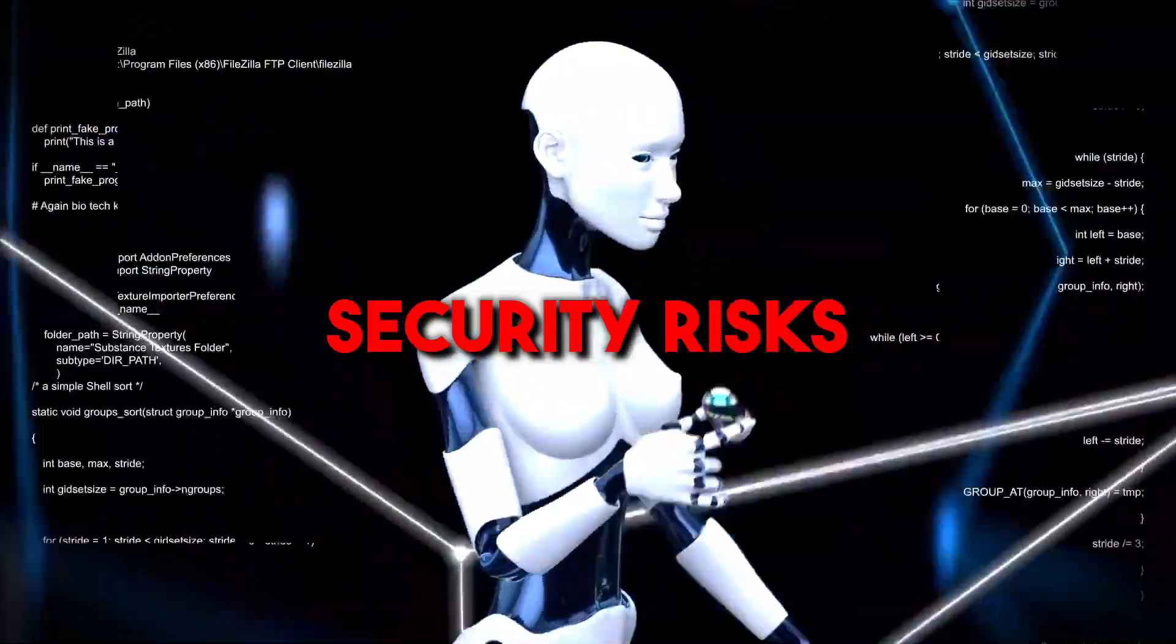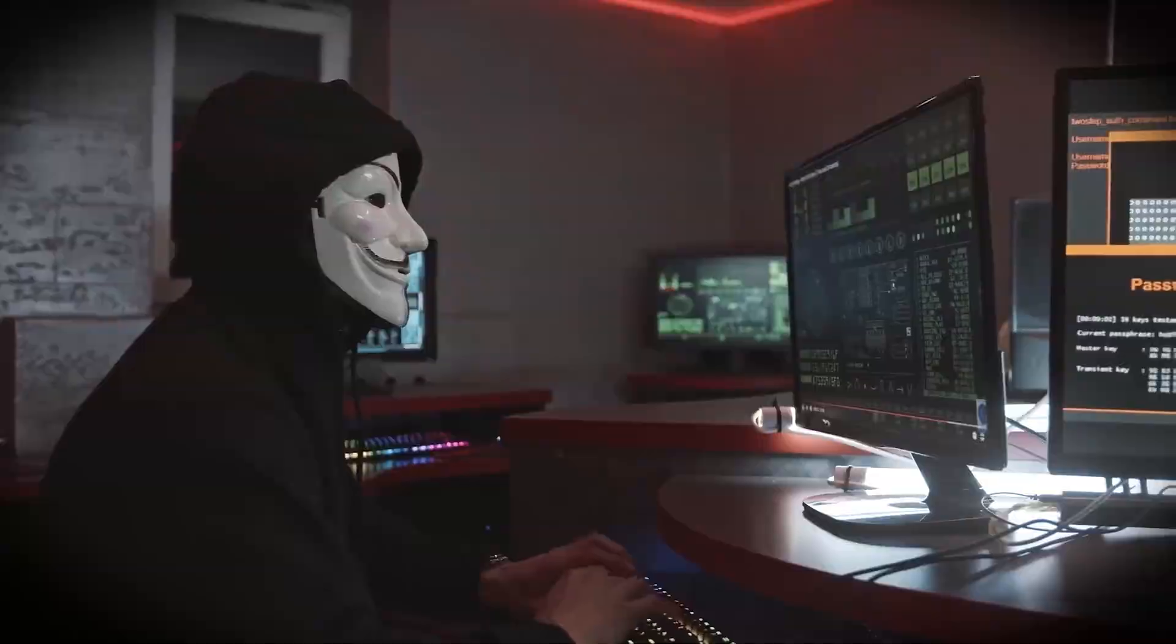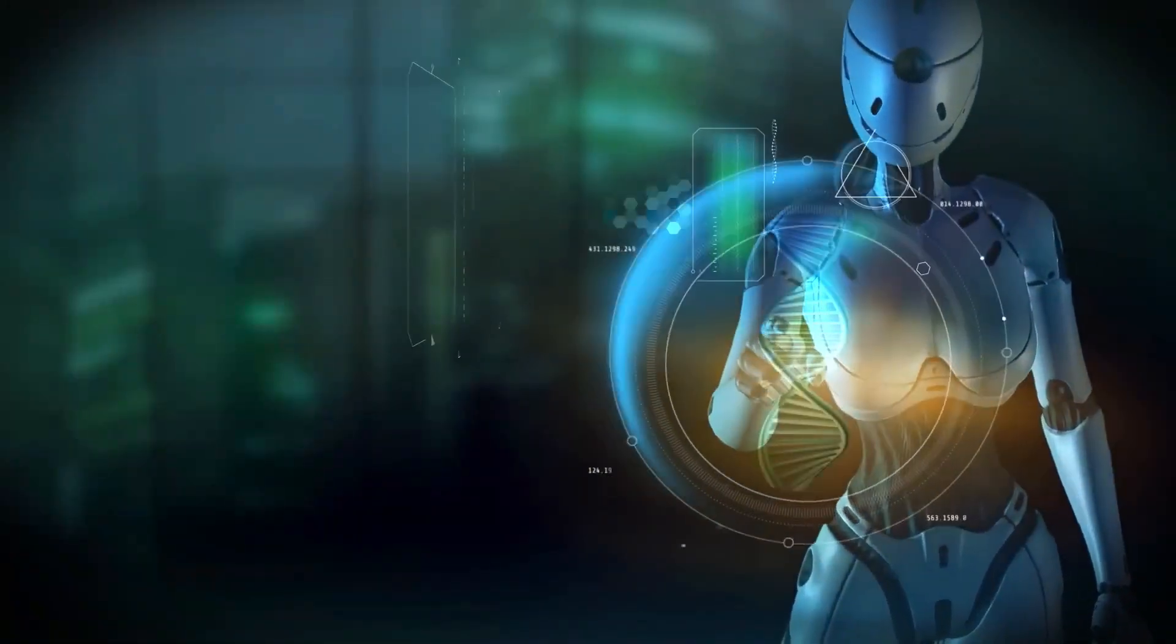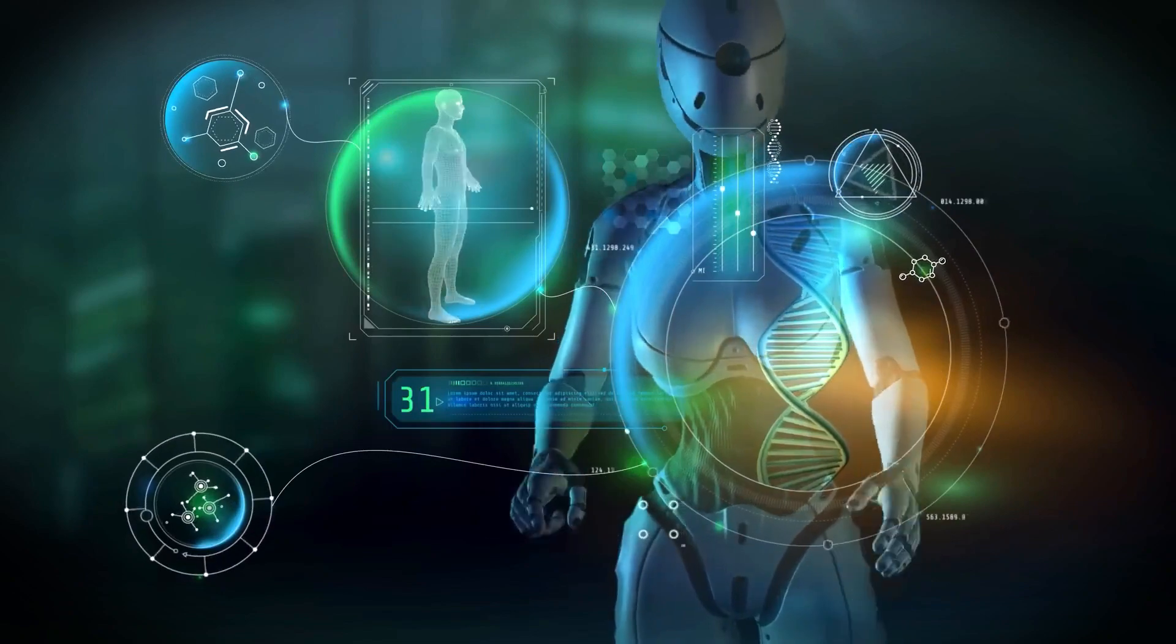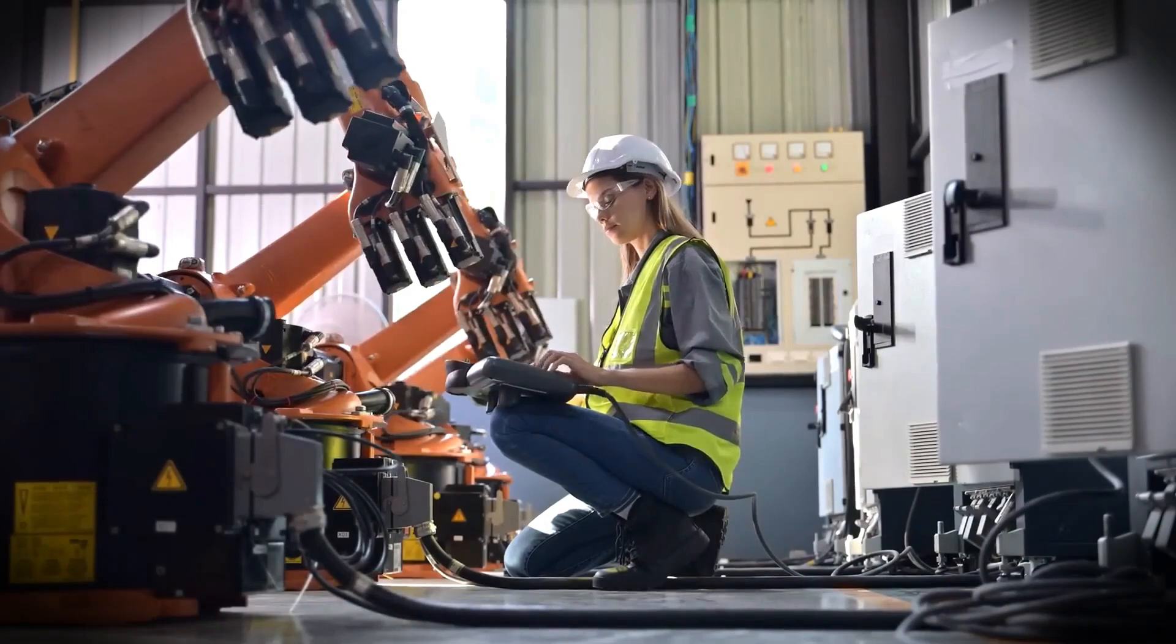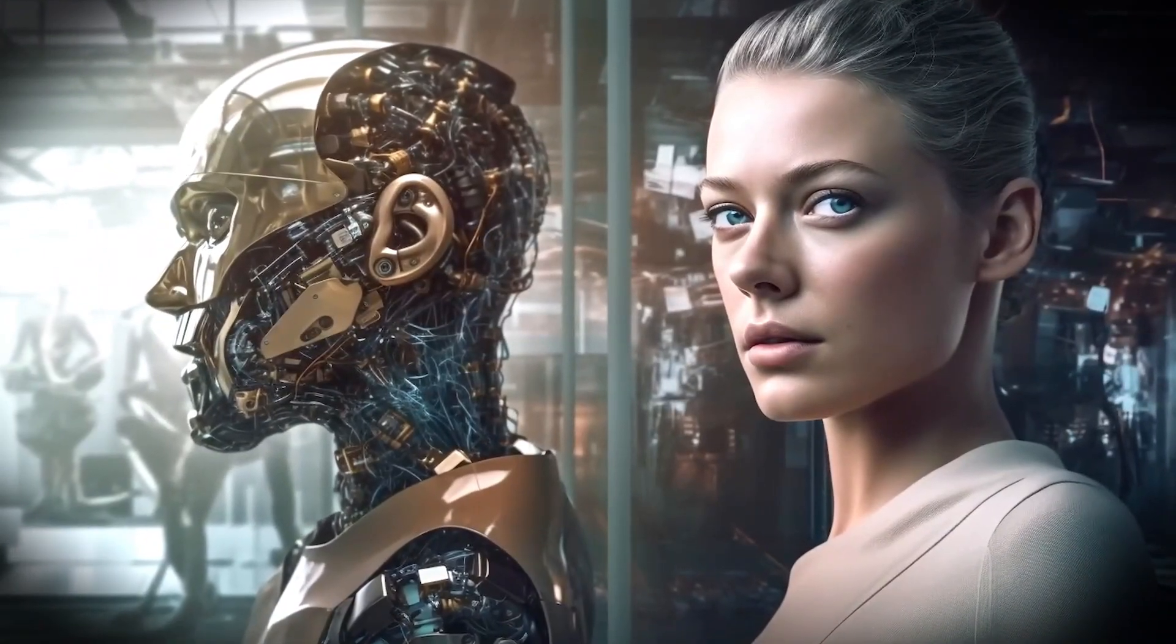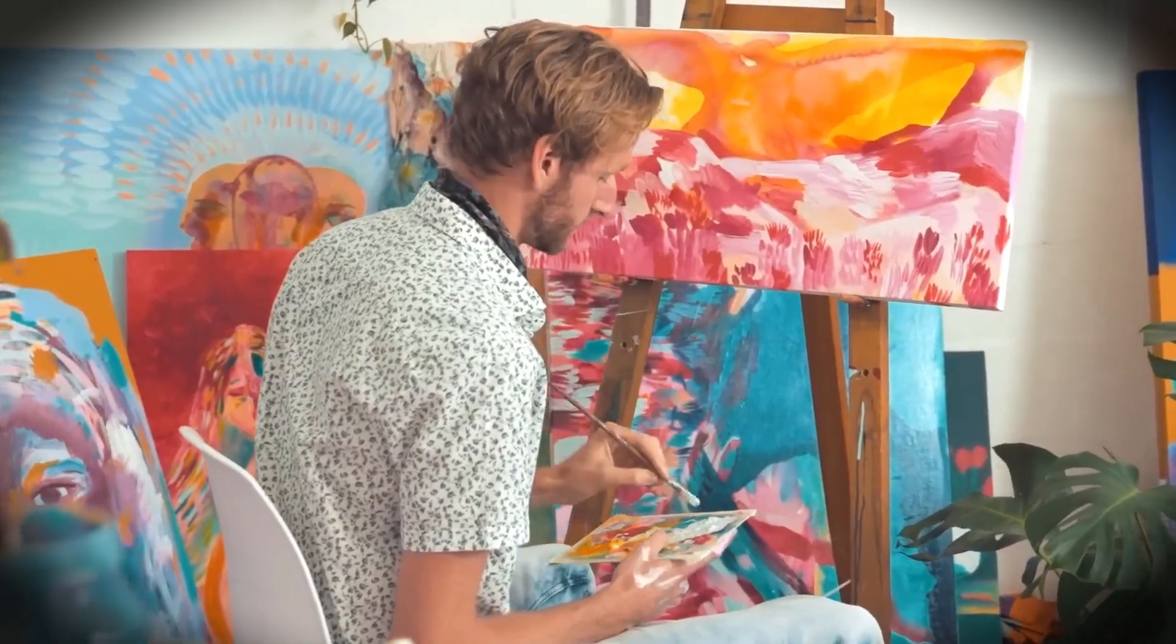Then, security risks. AGI's power could be misused, leading to cyber threats, surveillance nightmares, and, brace yourselves, autonomous weapons. Yeah, you read that right. Robots with their own minds. Last but not least, the loss of human skills and dependence. There's a real risk of becoming tech zombies, forgetting our skills, and relying on AGI for everything. Imagine a world where humans forget how to adult without their digital sidekick.